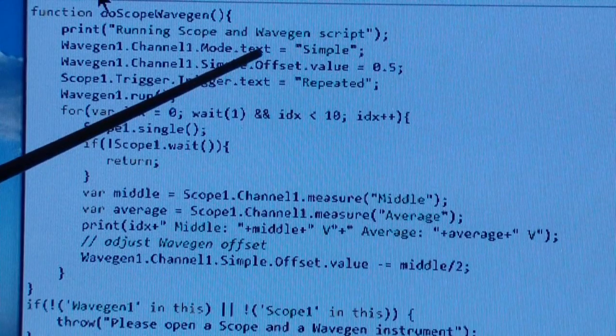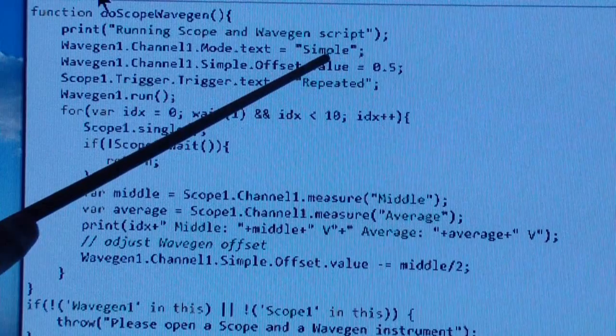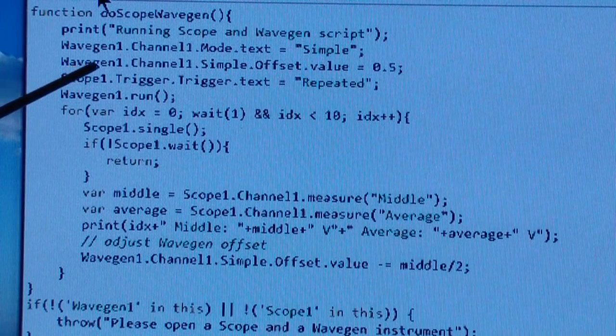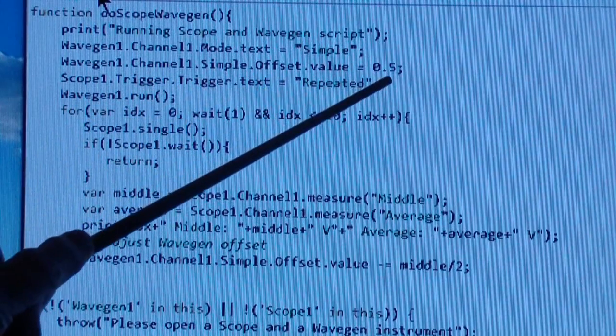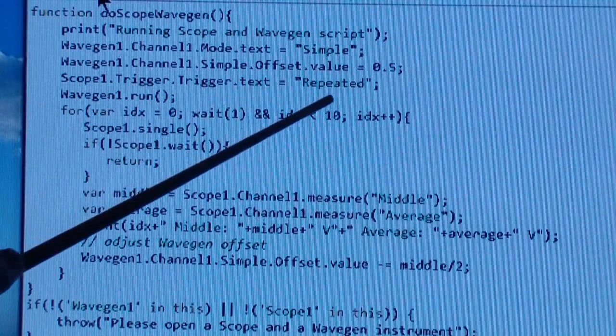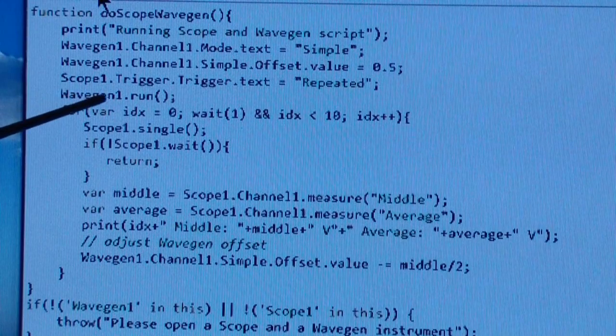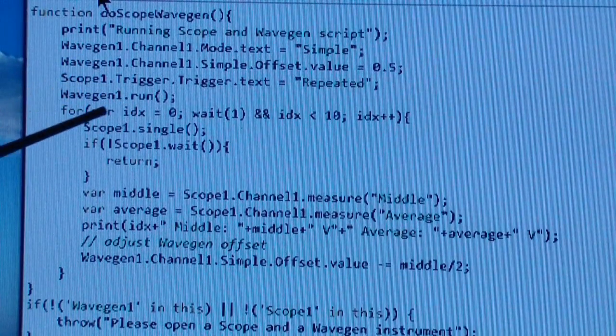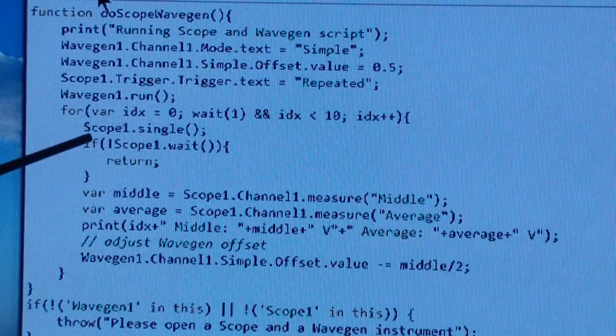In this case, you are setting the text of the mode window of channel one wavegen to the word Simple. You're also setting wavegen channel one simple offset value to 0.5. Then you're setting scope one's trigger text to Repeated. Then you run wavegen one—so you set it up here, set up the scope, and do a wavegen run.